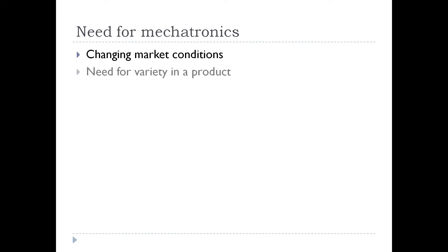Need for variety in a product: customers now demand variety in shape, size, color, dimension, features, and aesthetics of a single product. The best example is a mobile phone — we all have different models, and even within the same model we have different colors. Mechatronics is the key solution to meet these demands.